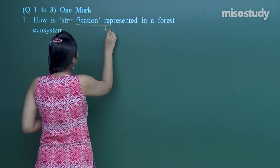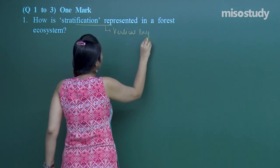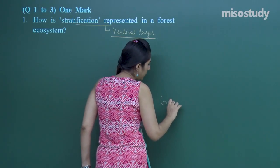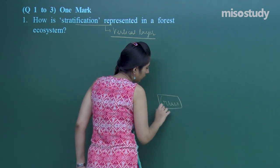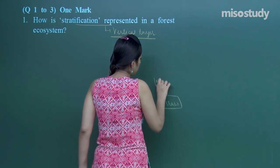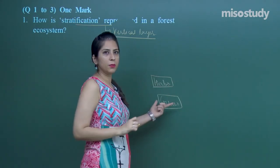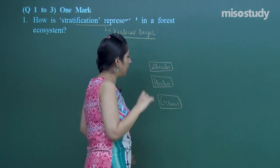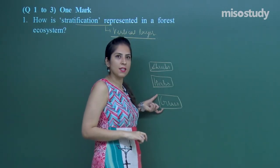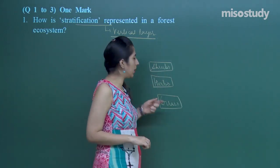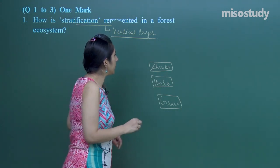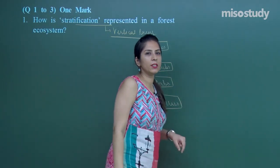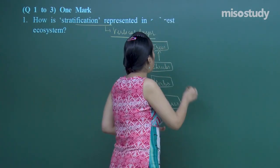So let's write about stratification. Stratification means vertical layering. Starting from the base: grasses are present, then herbs, then shrubs. The height of grasses is very less compared to herbs, and the height of shrubs is much more than herbs and grasses. After that, trees are present. Even among trees, three types can be distinguished on the basis of height.